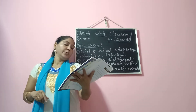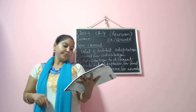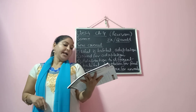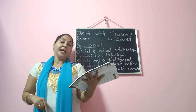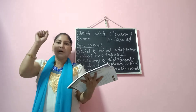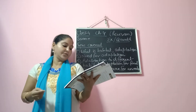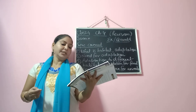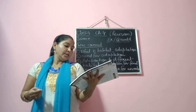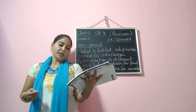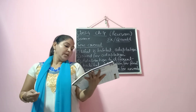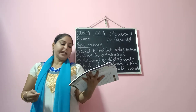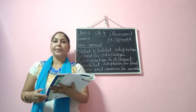Now we move to question number D — match the following. Herbivore — answer is cow. Carnivore — answer is lion. Please write the number beside the correct answer. Omnivore — bear. Camouflaging animals — chameleon. Aquatic animals — seahorse. Aerial animals — bird. Arboreal animals — monkey.